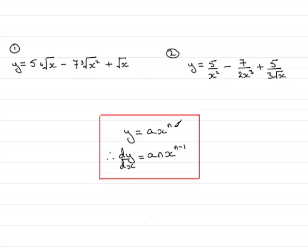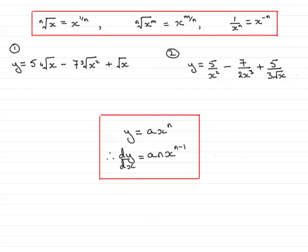Now, in order to get any of these terms into this particular type, then we need to know the rules for indices. So let me just remind you if you've forgotten. The nth root of x can always be written as x to the power 1 over n. And the nth root of x to the power m can be written as x to the power m over n. And also, 1 over x to the power n can be written as x to the power minus n.